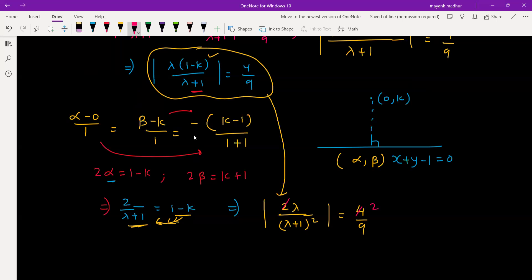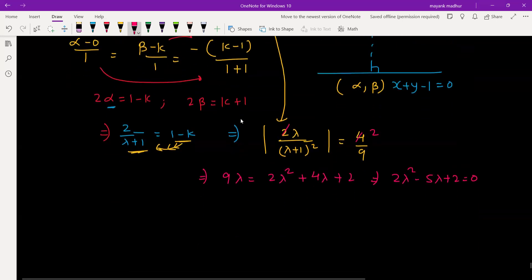2 and 2 will cancel out. Cross multiplication gives 9 lambda equal to 2 lambda square plus 4 lambda plus 2. Solving this quadratic: 2 lambda square minus 5 lambda plus 2 equal to 0. Lambda equal to 2 and lambda equal to half.